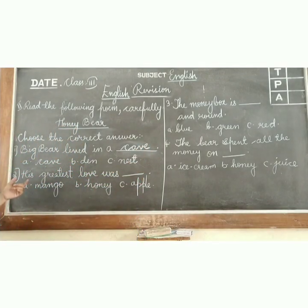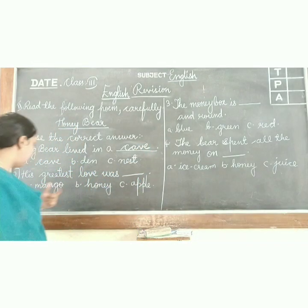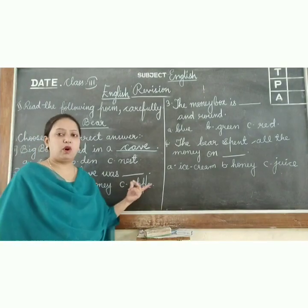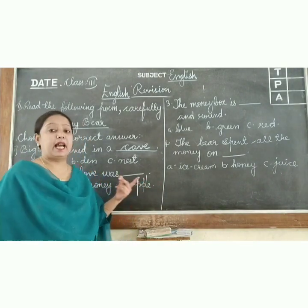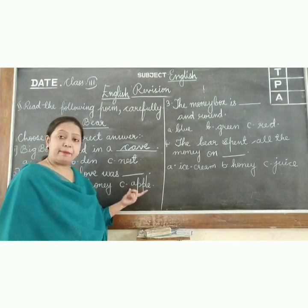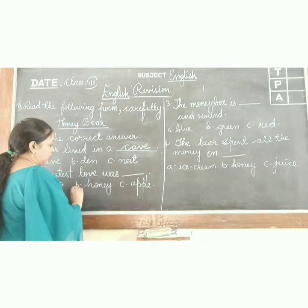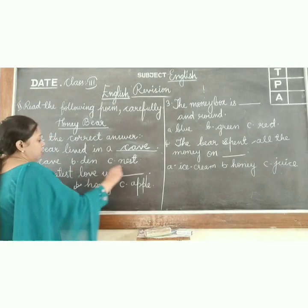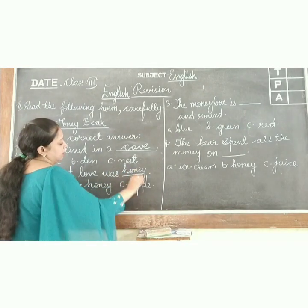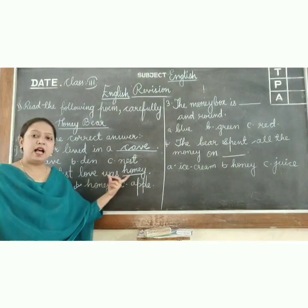Next one: His greatest love was dash. Options are mango, honey, or apple. What does he like to eat? The correct answer is honey. You have to write: his greatest love was honey.